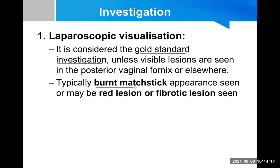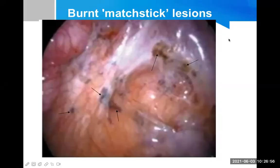The typical laparoscopic appearance is the burned matchstick appearance — blue-black deposits of endometrial tissue inside the abdominal cavity. This can be an MCQ question: burned matchstick appearance is seen in which condition? Always choose endometriosis. Rarely, there may be red lesions or fibrotic lesions.